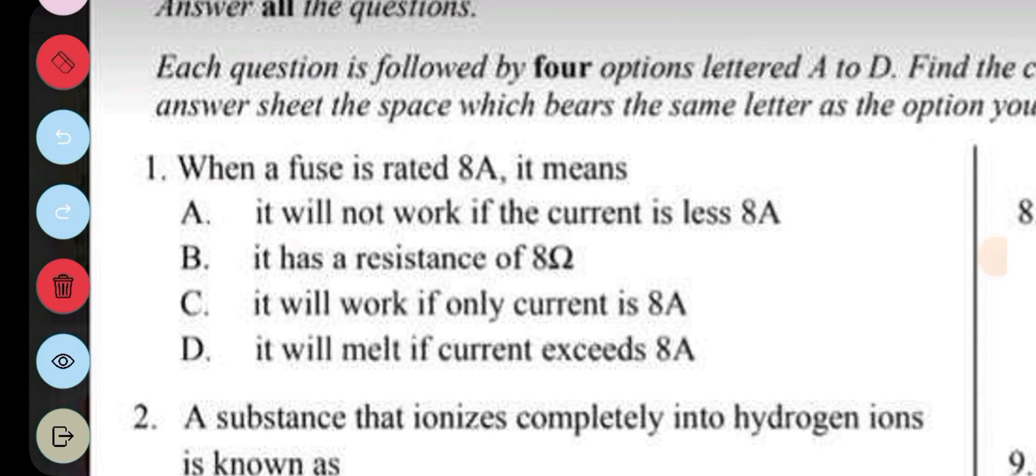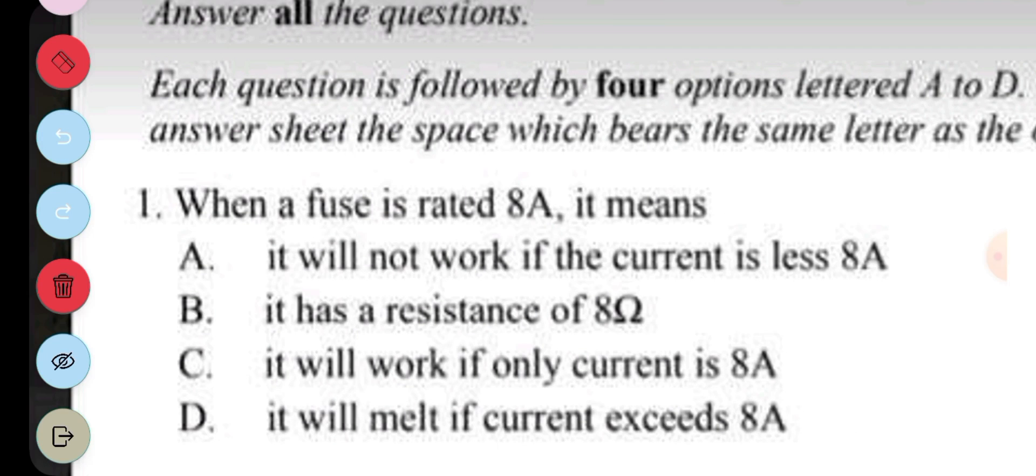This is one of the questions on the channel that is filled with most critical thinking and problem-solving questions. So let's begin with question 1. When a fuse is rated 8A, it means: A. It will not work if the current is less than 8A. B. It has a resistance of 8 Ohms. C. It will work if only the current is 8A. D. It will melt if current exceeds 8A. The answer to question 1 is D.